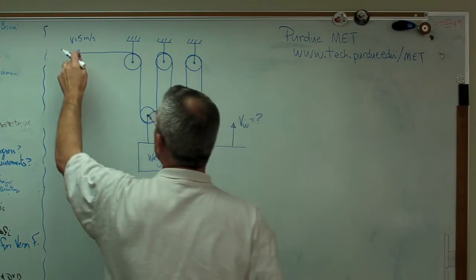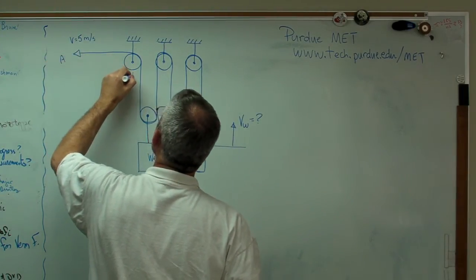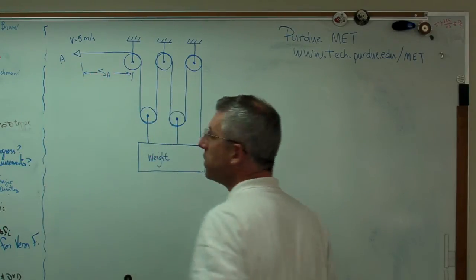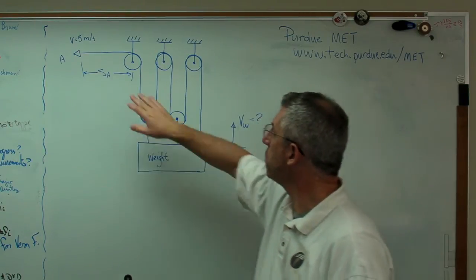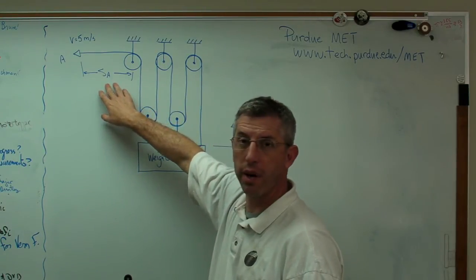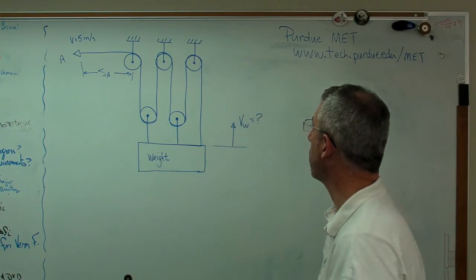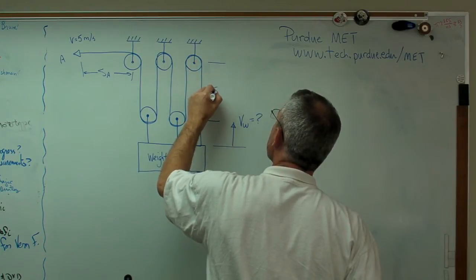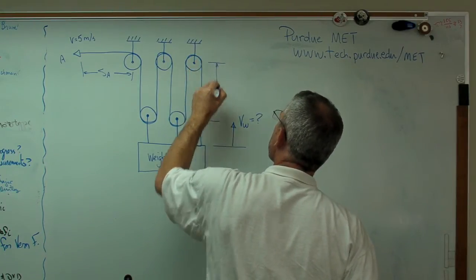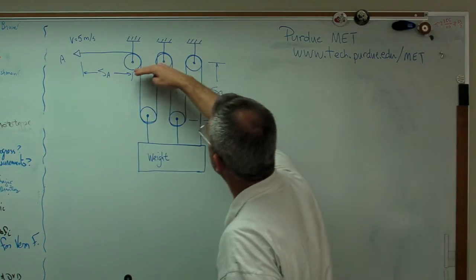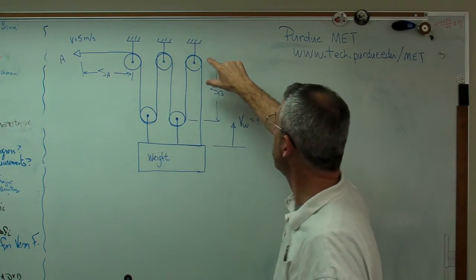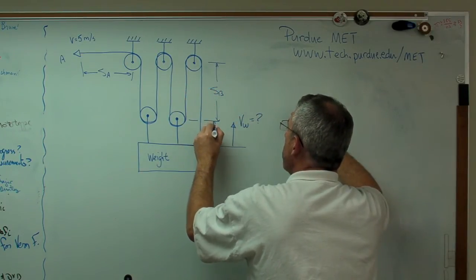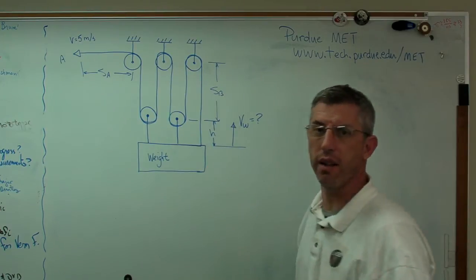So let's call this point here A, and this length here we'll call SA. S is a variable that usually gets used to describe a distance or a length. Now let's go here and we'll call this SB. I went there for a reason — that's the distance between the axles on these sets of pulleys here. This distance I'm going to call H. You can call them anything; I'm calling them these.